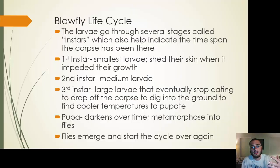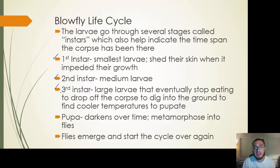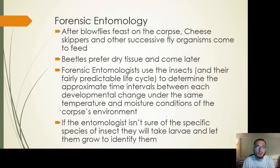The blowfly life cycle: eggs hatch into first instars, which are the smallest. They shed their skin when they outgrow it and become second instars — medium larvae. Then they shed again and become third instars — large larvae — that eventually stop eating when they're big enough and decide it's time to pupate. They leave the corpse and go into the ground where it's cooler, form a cocoon that darkens over time, then metamorphose into flies that emerge and find a new corpse to start the cycle all over again.